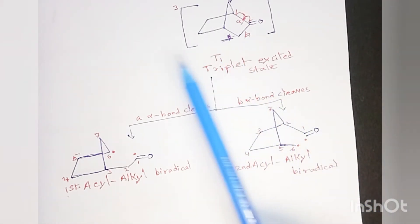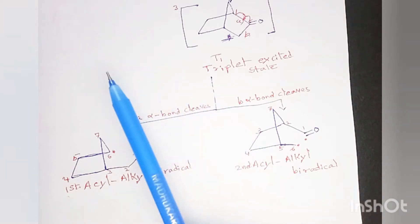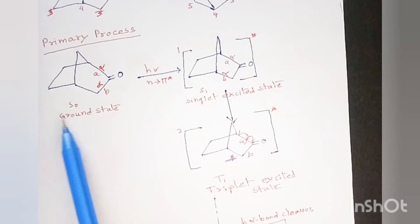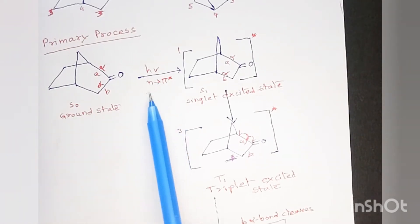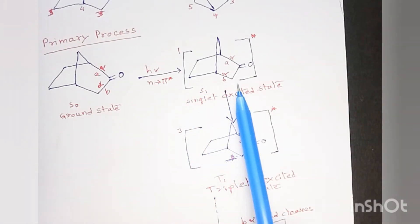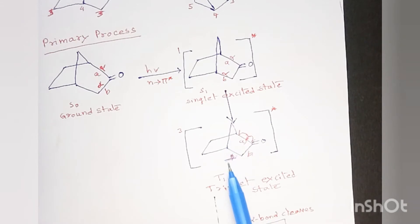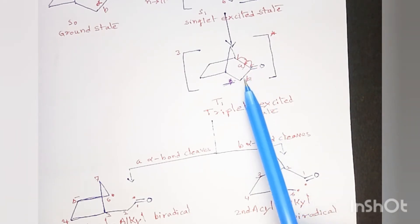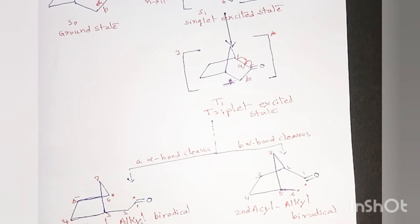This is the primary part. In the primary process, from the ground state to the singlet state, and from singlet to triplet state, and in the triplet state the alpha bond of the carbonyl compound cleaves. This is the primary part.